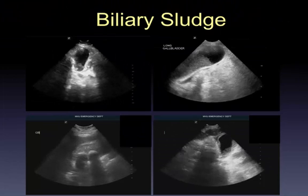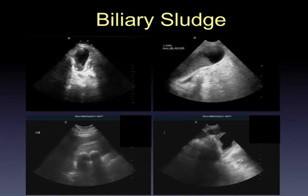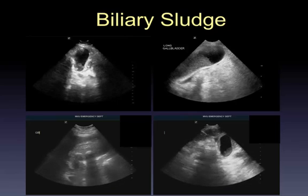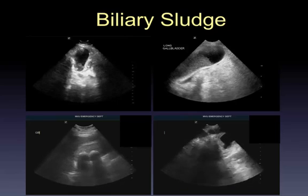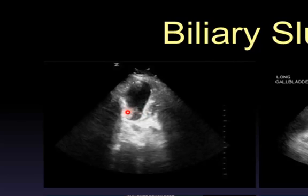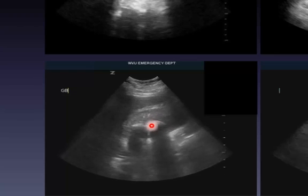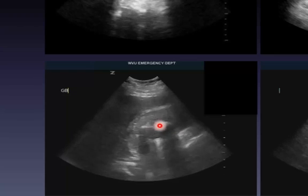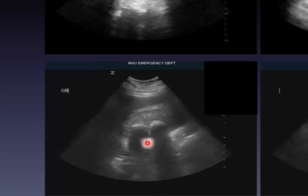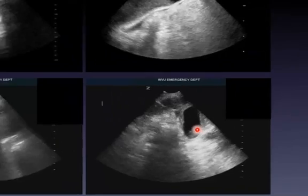Here is some sludge in the gallbladder. Sludge tends to be not quite as echogenic as stones, doesn't generally cast acoustic shadows, and is usually in the more dependent areas. You'll see sludge layering out in the gallbladder. There can also be stones within the sludge that do cast shadows.